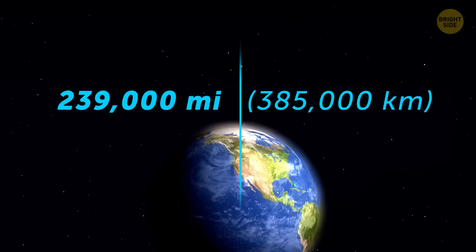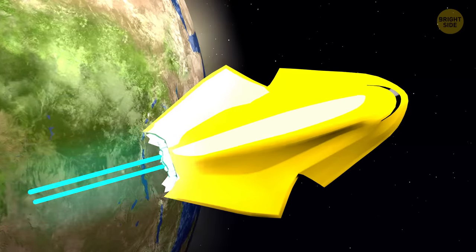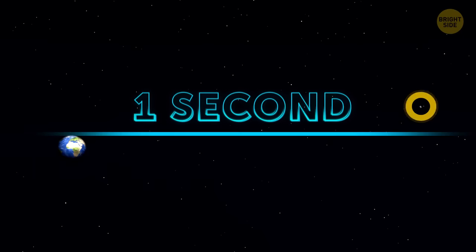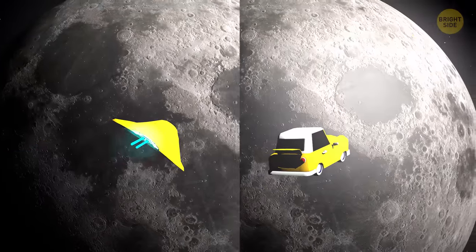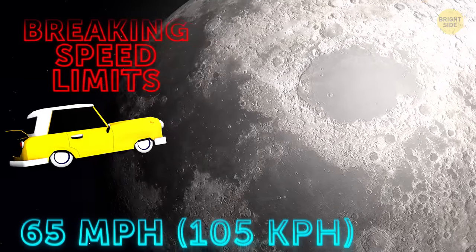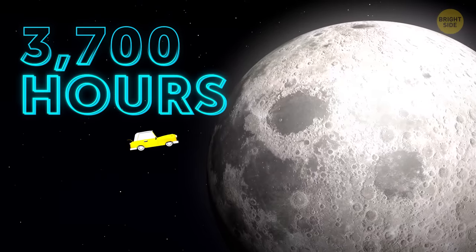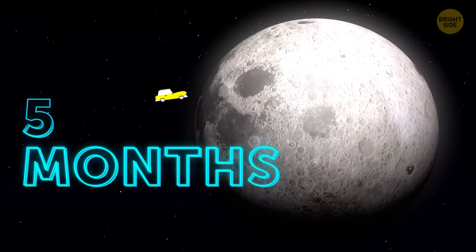The Moon is almost 239,000 miles away from our planet. This distance is the same as 30 Earths placed side by side. If you were traveling to our planet's natural satellite at the speed of light, it would take you just a bit more than one second to reach your destination. For comparison, if you decided to drive to the Moon without breaking speed limits at about 65 miles per hour, it would take you almost 3,700 hours, which is 154 days, or more than 5 months.